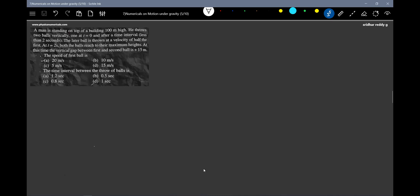And after a time interval, the later ball is thrown at the velocity of half the first. Both balls reach their maximum heights. At this time, the vertical gap between the first and second ball is 15 meters. You have to really analyze the problem carefully. You have to take help of the diagrams.